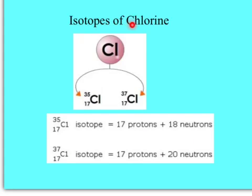Isotopes of chlorine. Chlorine has two isotopes: chlorine-35 and chlorine-37. For chlorine-35, it has 17 protons and 18 neutrons. Chlorine-37 also has 17 protons but it has 20 neutrons.